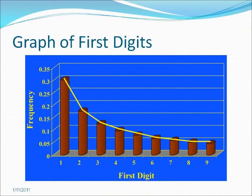This graph plots the actual and expected digital frequencies of first digits. The yellow line indicates the expected digital frequencies of the first digit, and the bars indicate the actual proportions of an observation. In this case, the actual data almost perfectly conforms to Binford's law.